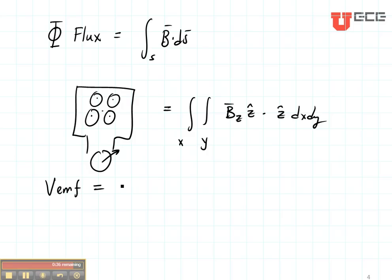That is found by the number of turns of the loop times the change of flux with time. Now remember, the change of flux can be changed by changing the magnetic field or by changing the surface.